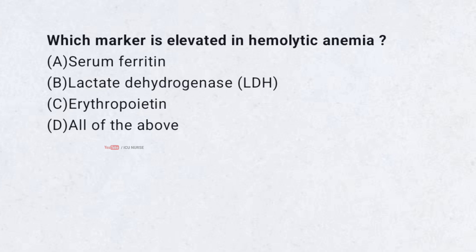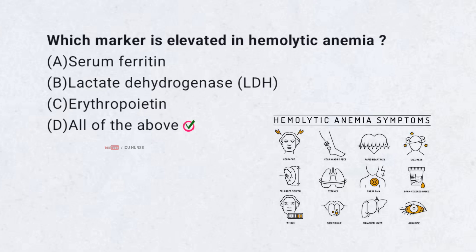Which marker is elevated in hemolytic anemia? A. Serum ferritin, B. Lactate dehydrogenase (LDH), C. Erythropoietin, D. All of the above. Correct answer: D. All of the above. Hemolysis increases LDH, ferritin, and erythropoietin.